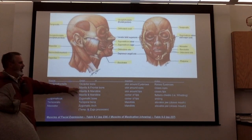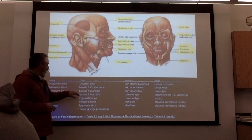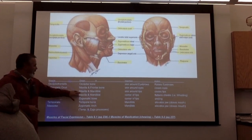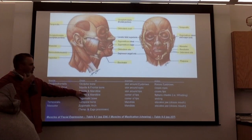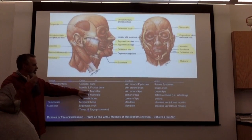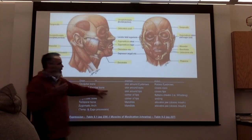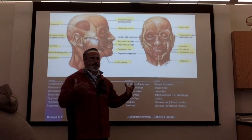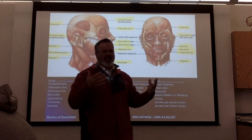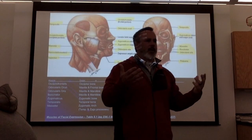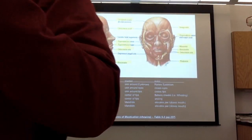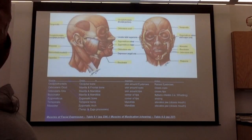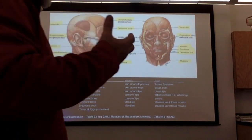Orbicularis oculi squeezes the eyes shut. Orbicularis oris originates from the maxilla and the mandible, surrounds the lips, and closes the lips tightly — almost like pursing your lips.